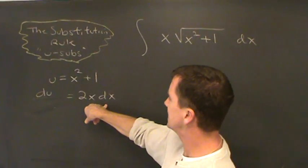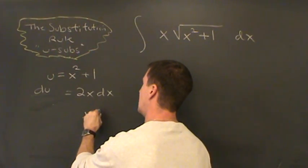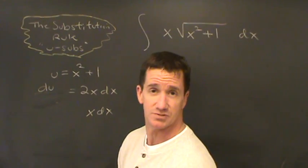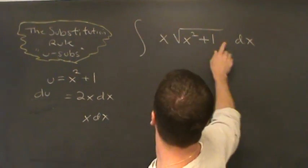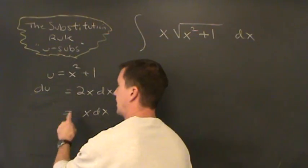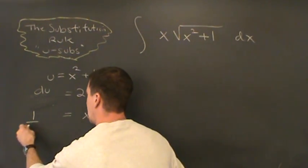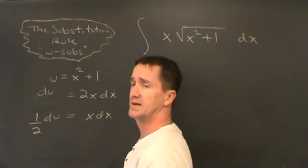And lastly, I'm going to isolate this x dx on the right side. This is so I can do the substitution. See the x and the dx? What I have to do is divide by two on both sides, so I get one half du.